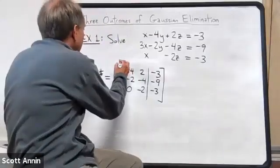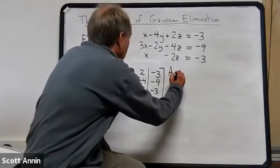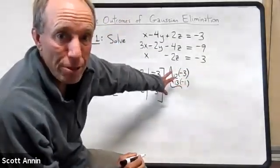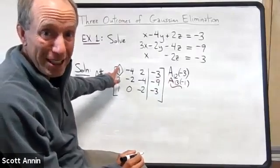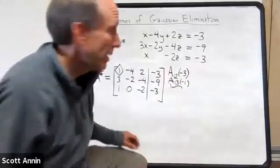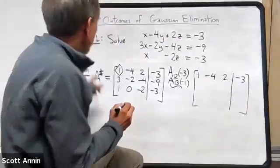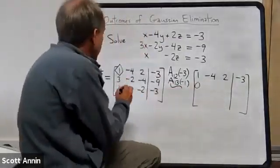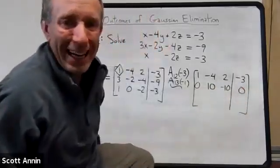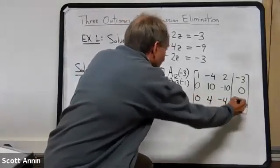I already have a pivot in the upper left corner of this matrix, which is great. So what I'm going to do next is simply do A12 of negative 3 and A13 of negative 1. These two elementary row operations will zero out the two numbers that are below this top pivot. That's what we need to do because the lower rows need to have pivots that are further to the right. So let's do these two operations together. The first row will stay exactly the same as before. But I'm going to now take negative 3 times the first row and add that to the second row, and I should get 0, 10, negative 10, and 0. And then when I take the negative of the first row and add it to the bottom row, I get 0, 4, negative 4, and 0.